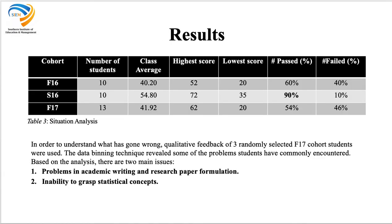These are the results. Looking at the descriptives, there are three cohorts: the February 2016 cohort, September 2016 cohort, and February 2017 cohort, with roughly equal student numbers of approximately 10, 10, and 13. The class average for February 2016 was 40, which rose to 54.8 in September 2016, and February 2017 it dropped again to 41.92. If you consider the passing rate, in February 2016 it was 60%, which rose to 90% in the next semester, but then drastically dropped to 54%.